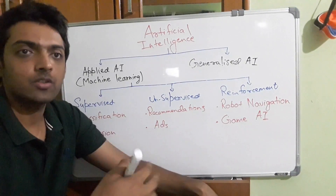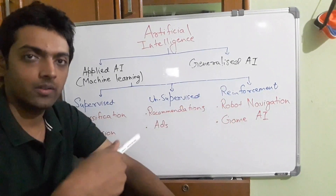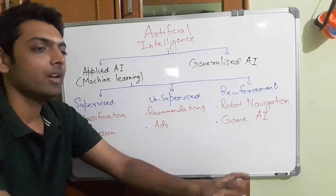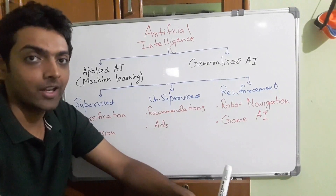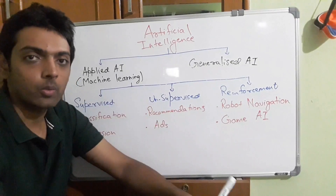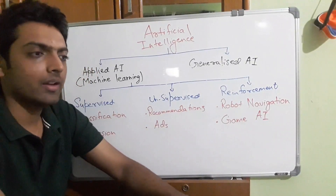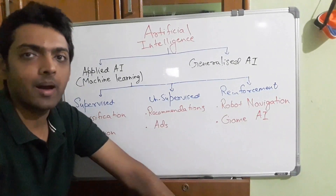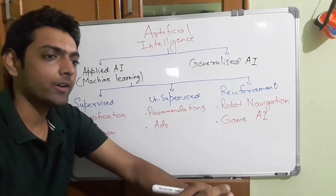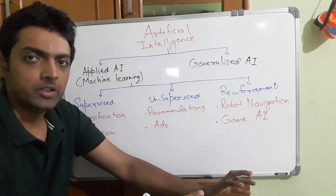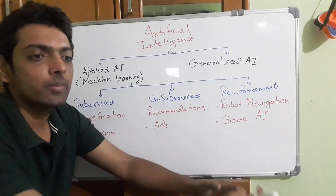The third part is reinforcement learning — basically the real-time changing of parameters until a system learns to behave the way we want. For example, in robot navigation, we keep changing the robot's parameters until it starts moving forward correctly, iterating and learning. Another example is game AI — in a game like Rise of Nations, the AI understands your resources, your army, your playstyle, and tries to adapt and win the game.